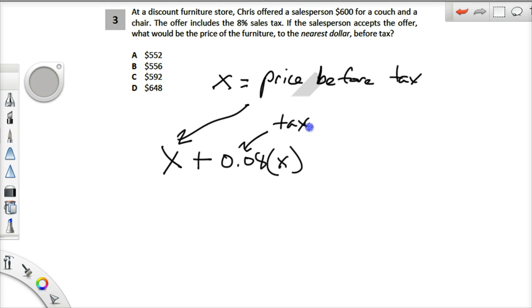When you add that together, that'll give us $600. Just a little review of the distributive property here. If we look at this, we see X is being multiplied by a hidden coefficient.